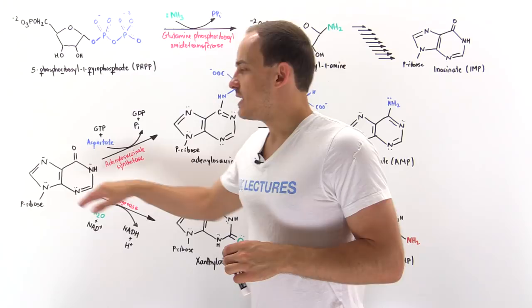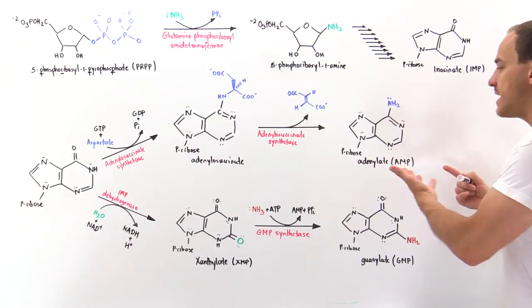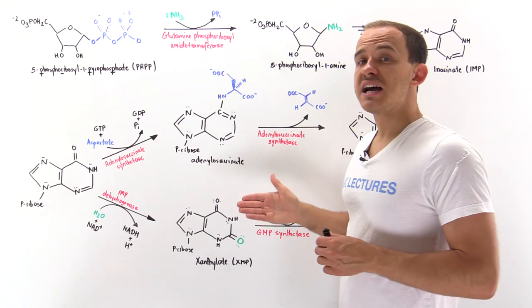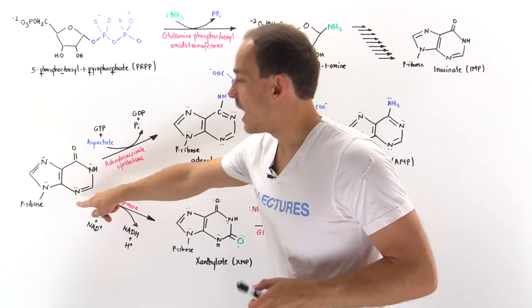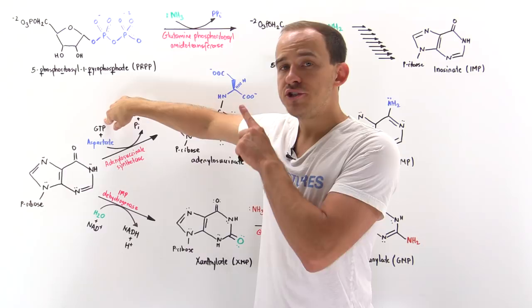Let's begin by focusing on the upper pathway. Let's suppose we have plenty of GMP in our cell and no AMP, so we're going to follow this upper pathway. The upper pathway is catalyzed by a single enzyme, adenylosuccinate synthetase. We begin with our IMP as shown here. We take this IMP as well as this aspartate and a GTP.